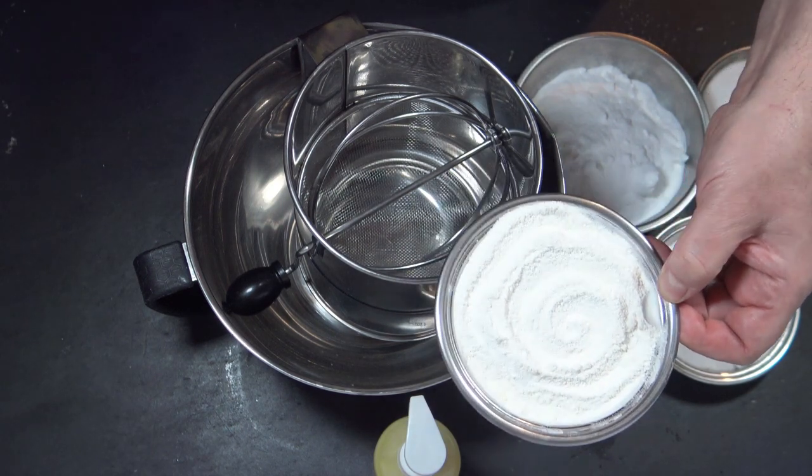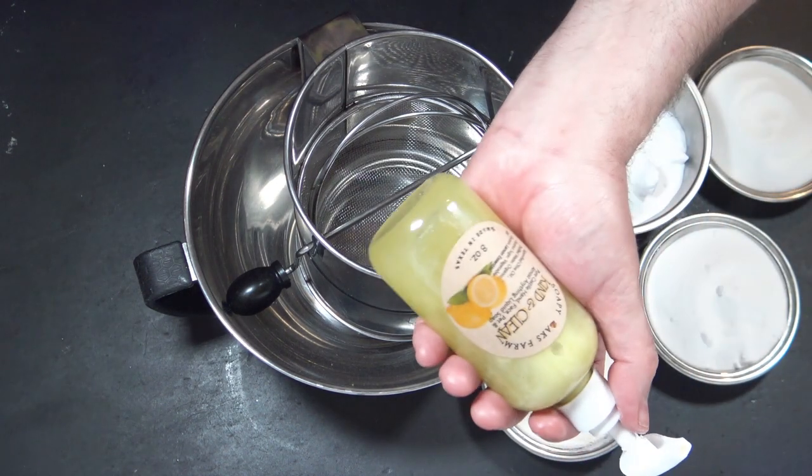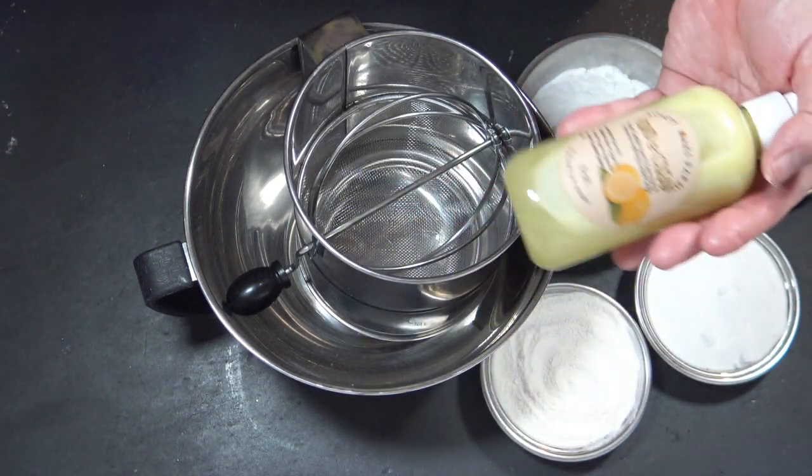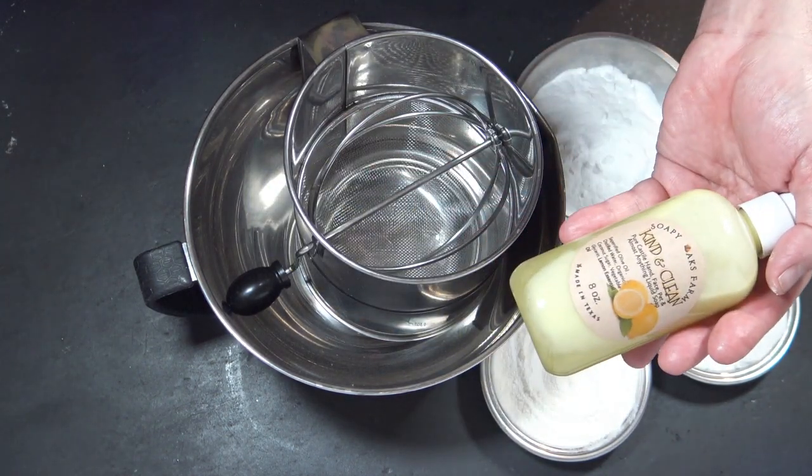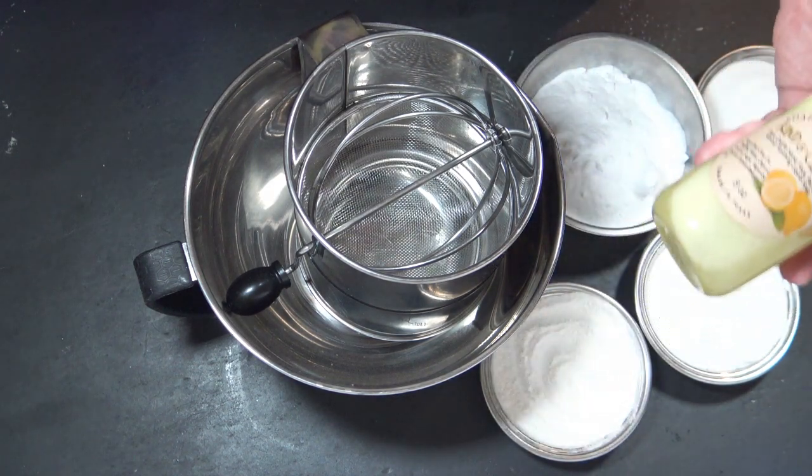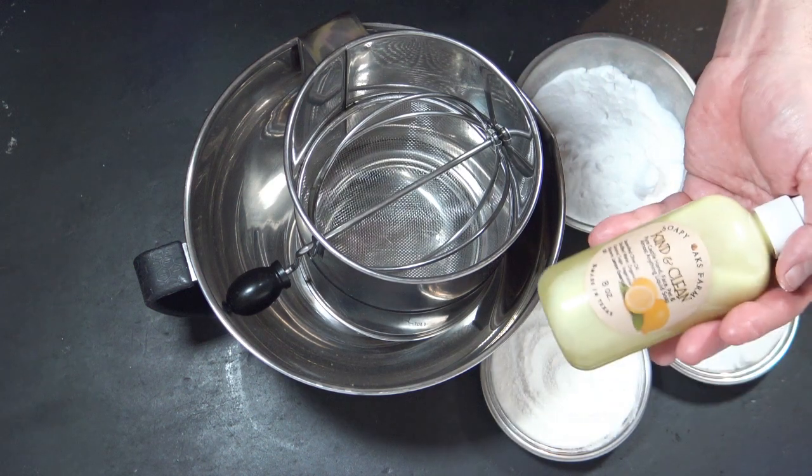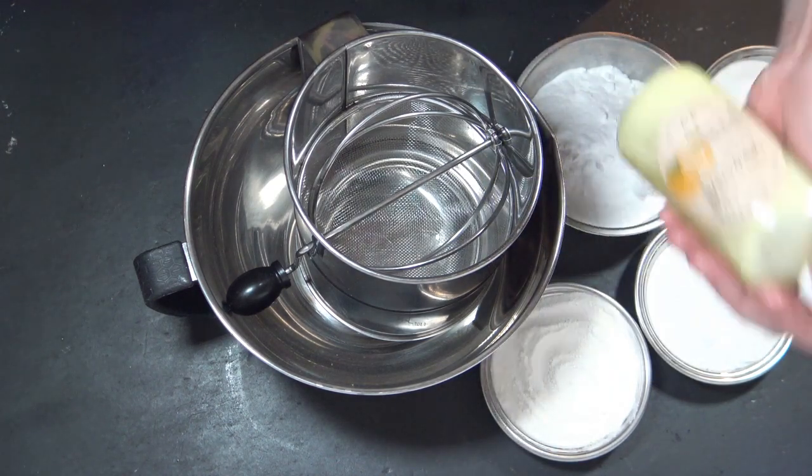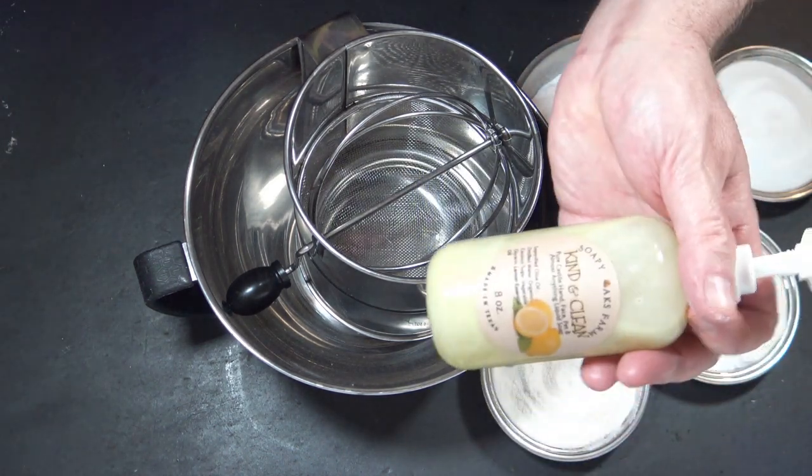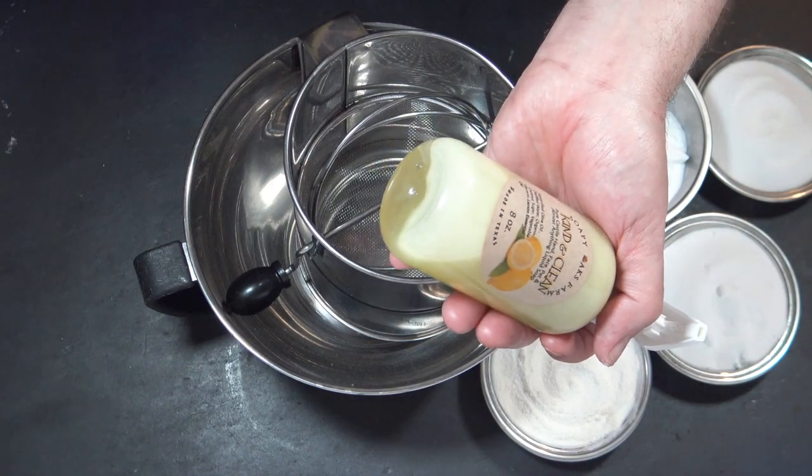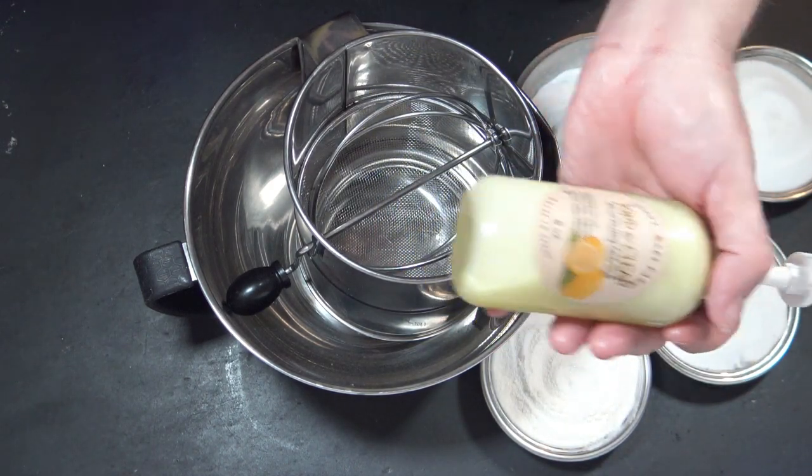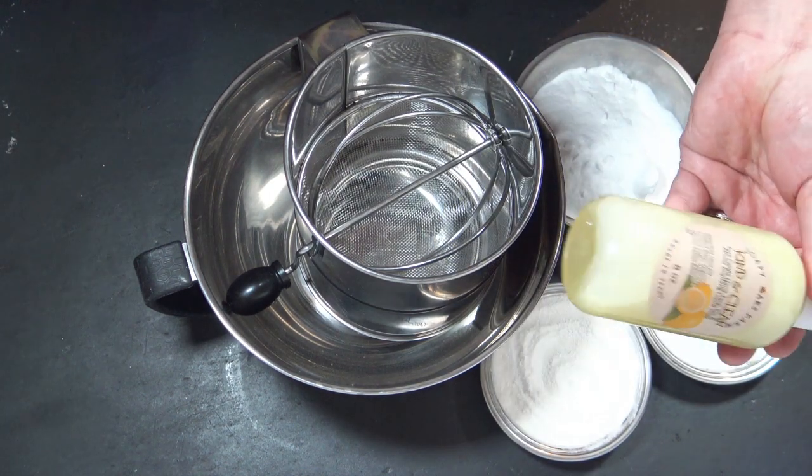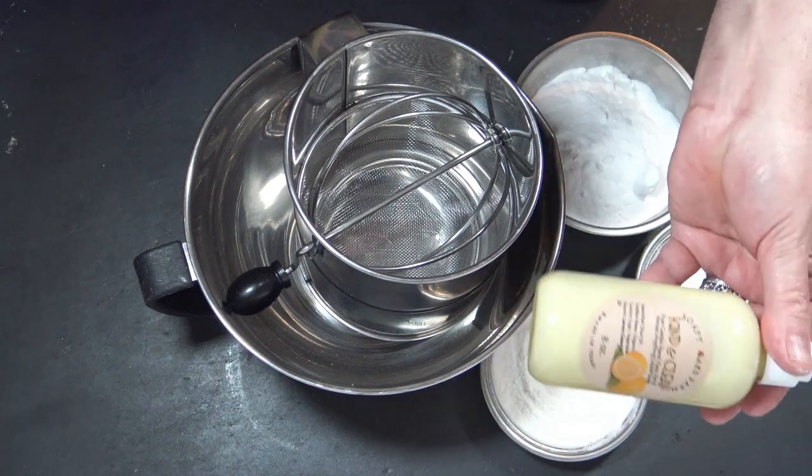Now I'm using my Soapy Oaks Farm Castile soap scented with lemon because lemon is great for all kinds of cleansing concoctions. Lemon is great for cutting through grease and it smells great. And I think it's such a refreshing scent. So we're going to be using lemon essential oil in my kind and clean, but you could use any liquid soap. You could use liquid dish detergent that you buy at the grocery store. I tried to keep this as clean and as natural as possible using ingredients that I know are safe.